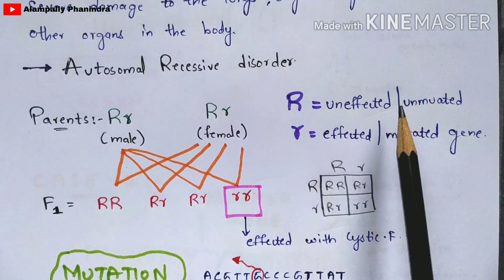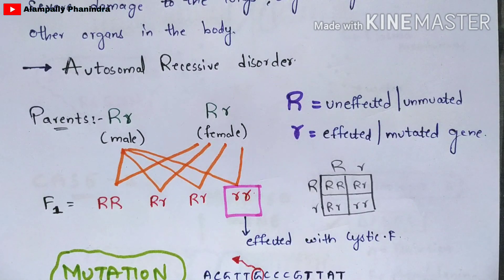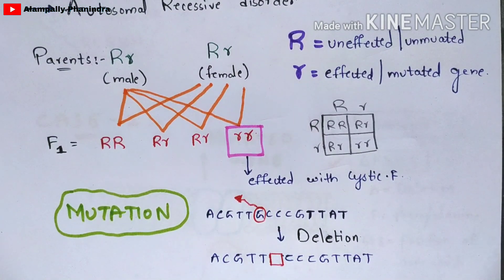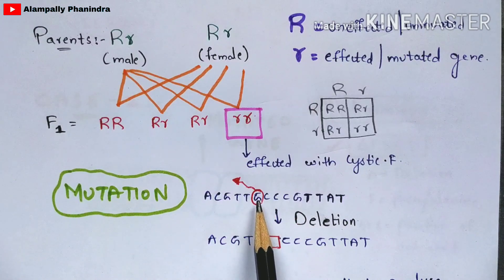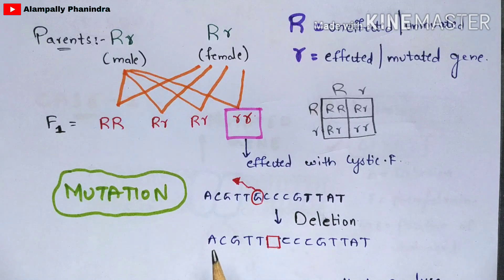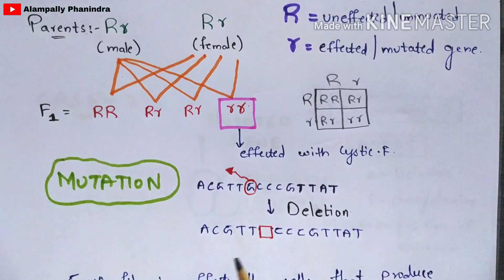Capital R indicates the unmutated gene and small r indicates the mutated gene. Cystic fibrosis occurs only by mutation. Mutation means that if you take a nucleotide sequence and remove one nucleotide, that is called deletion; if you add a nucleotide in the place of a locus, that is called addition. Once deletion or addition occurs, it shows structural changes in the DNA sequence, and those changes are called mutations. These structural changes in the gene lead to a particular type of disease — in this case, cystic fibrosis.